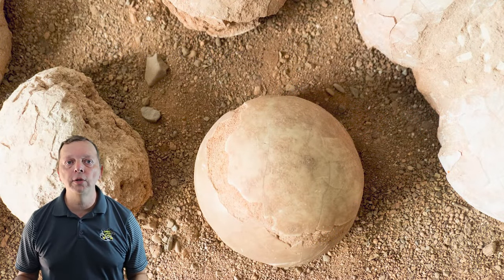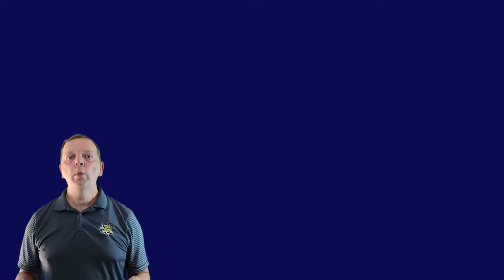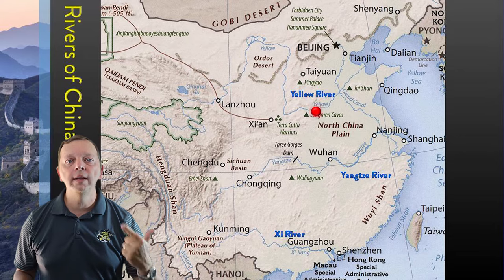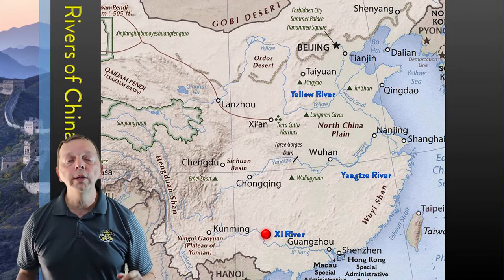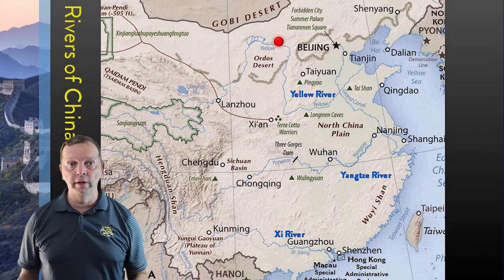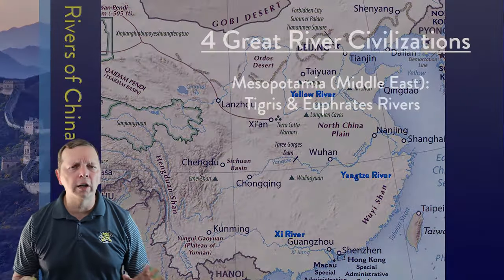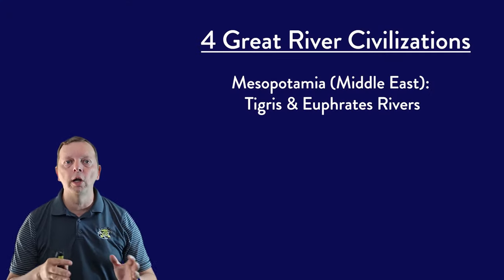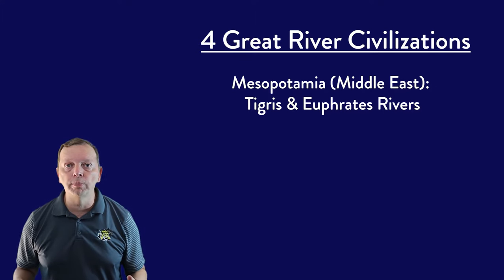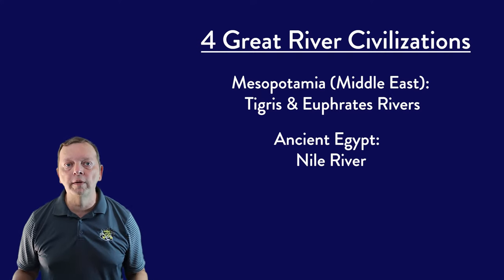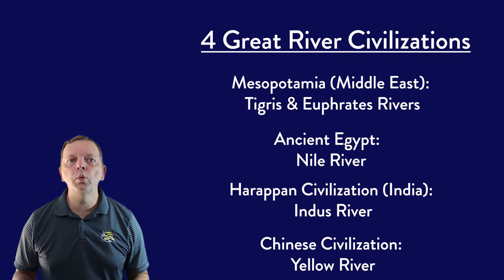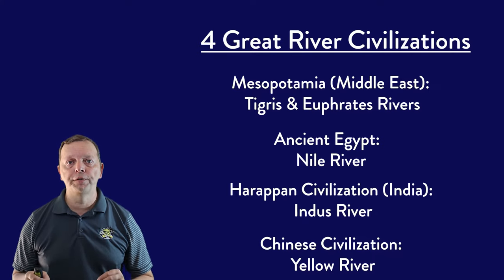We've talked about mountains and deserts — now, what about the rivers? There are many rivers in the region, but I'm going to highlight three: the Yellow, the Yangtze, and the Xi Rivers. To the very north, we find the last of the four great river civilizations. We've already talked about Mesopotamia along the Tigris and Euphrates, ancient Egypt made possible by the Nile, and the Indus River as the cultural hearth of South Asia.